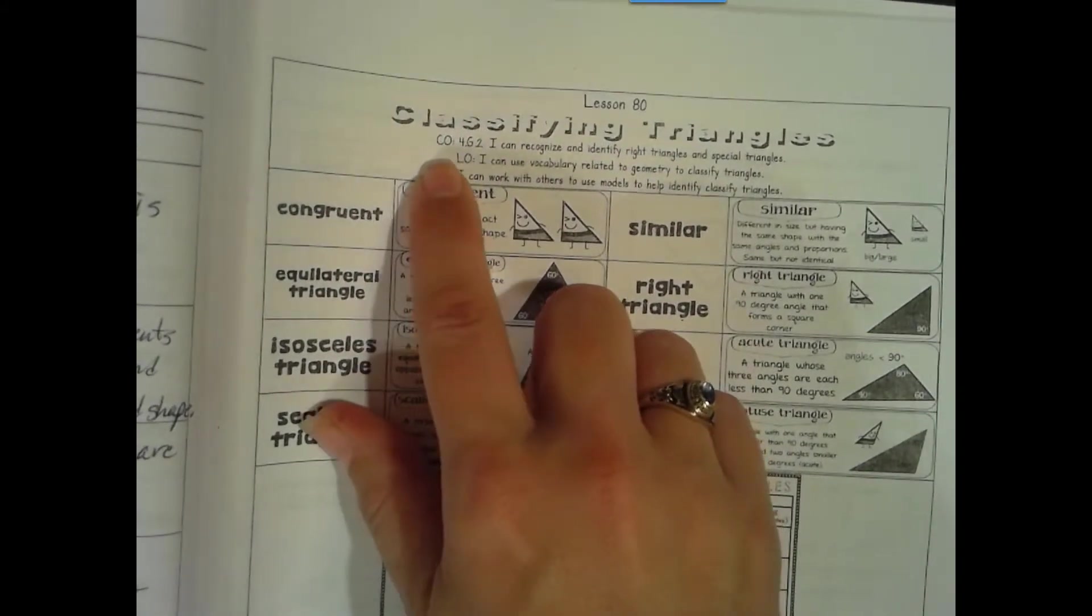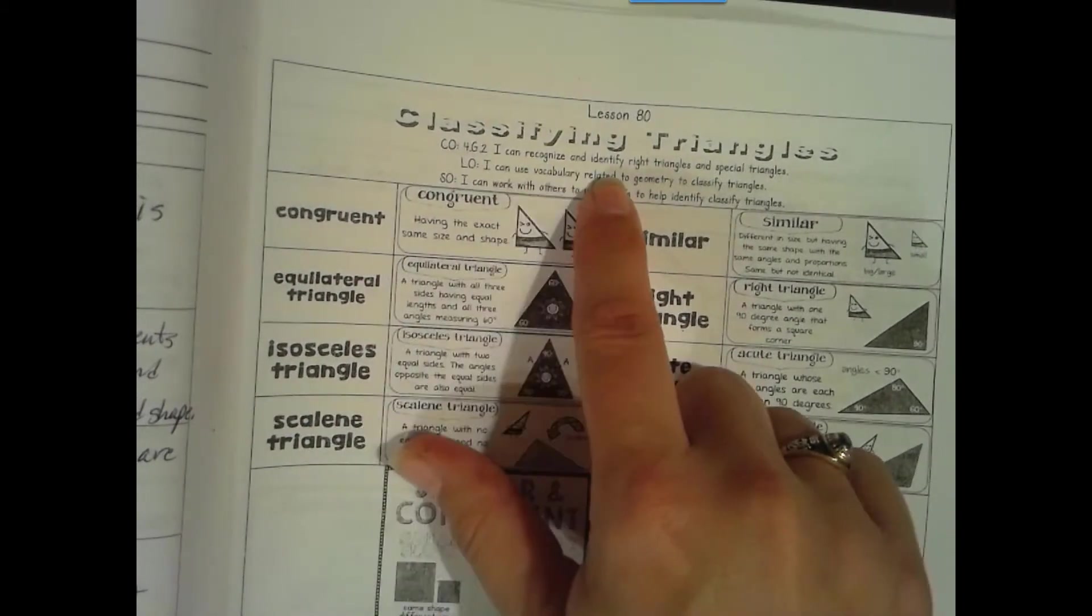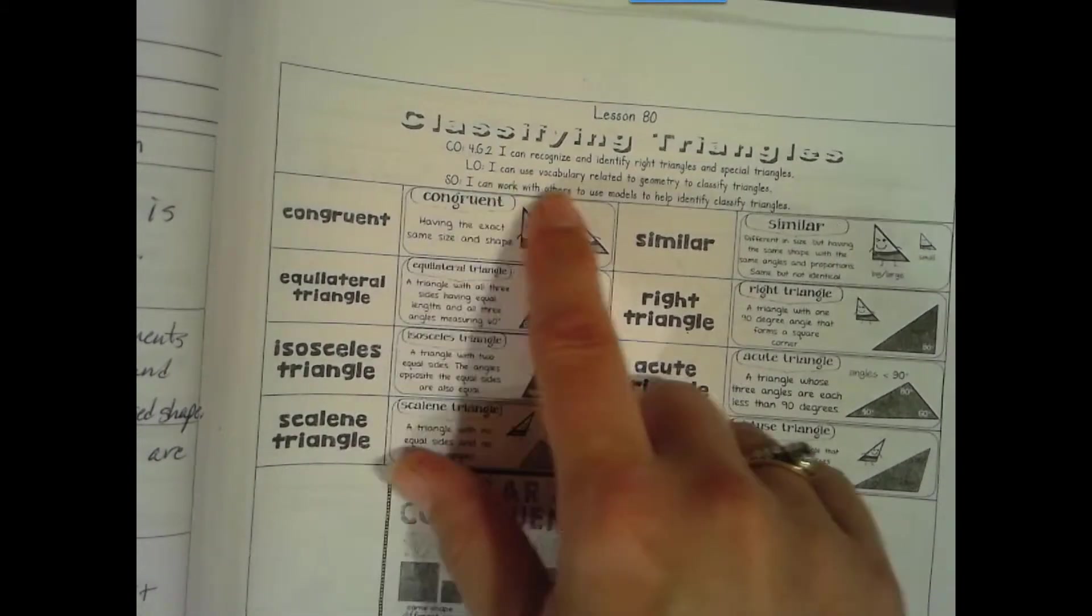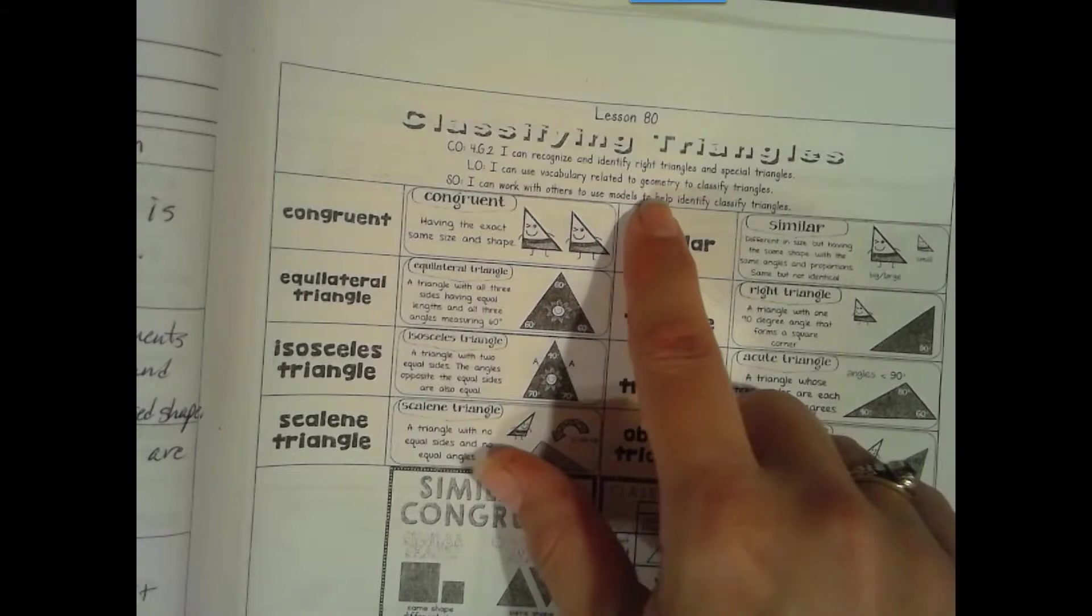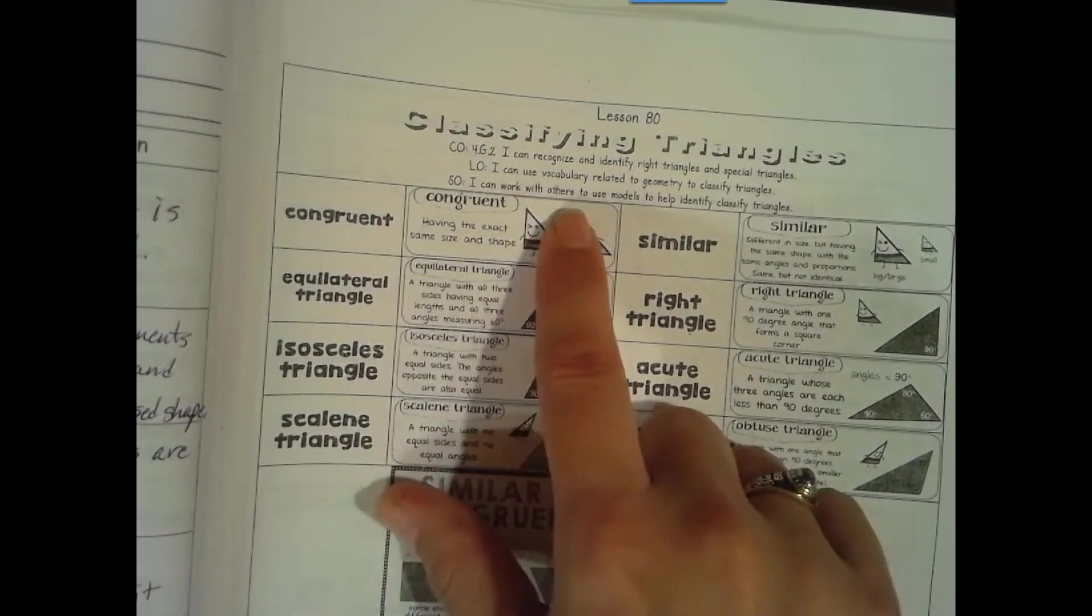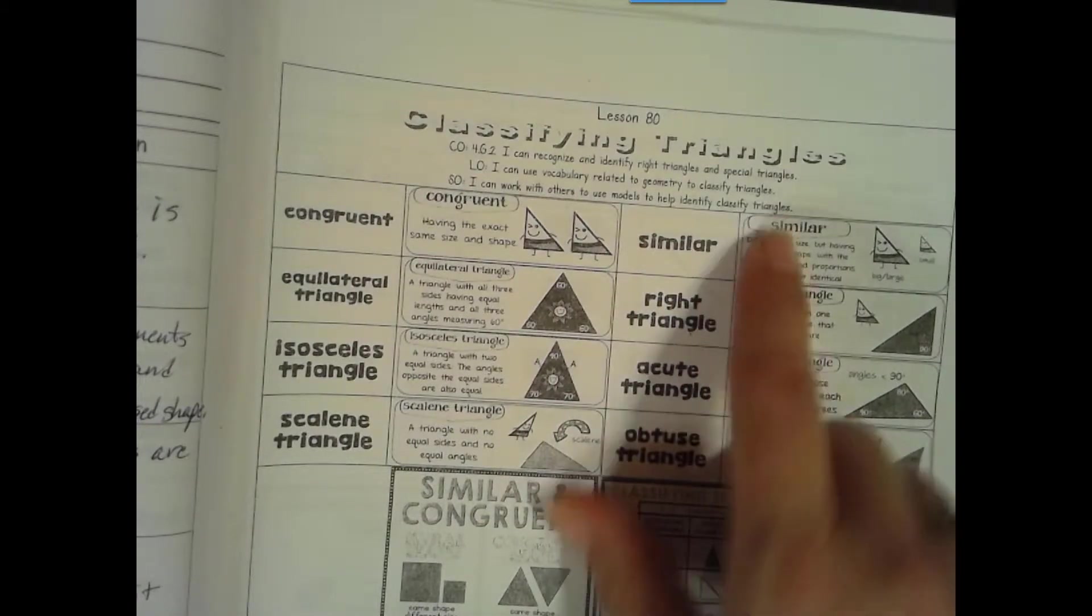So our content objective for 4th grade Geometry 2: I can recognize and identify right triangles and special triangles. Language objective: I can use vocabulary related to geometry to classify triangles. Social objective: I can work with others to use models to help identify classified triangles.